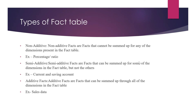We have different types of fact tables. First is the non-additive fact table. Non-additive fact tables are fact tables that cannot be summed up for any of the dimensions present in the fact table. For example, suppose you have a student table where each student gets multiple percentage scores — 40%, 50%, 60%, 70%, 90% — you cannot sum up all these percentages meaningfully. That kind of data is called a non-additive fact table.